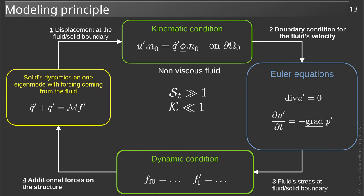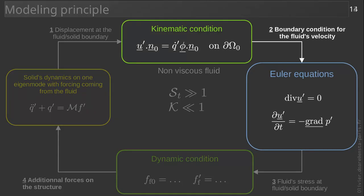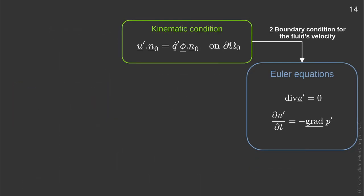To take this into account, we transform the kinematic condition by projecting it onto the normal to the interface. By doing this, we now simply forbid the fluid to cross the wall. We can now solve this simplified set of equations.